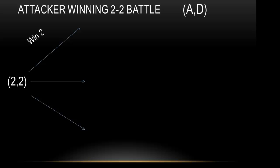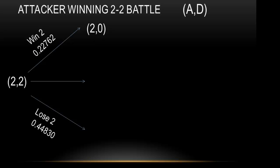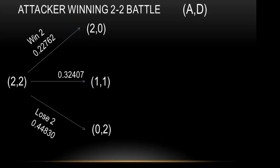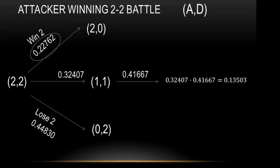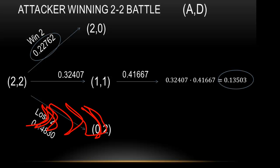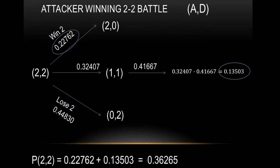A two-on-two battle actually has three branches because both sides are rolling two dice. You can win two, meaning the defender has no more armies and the battle is over. You can lose both, meaning you have no more attacker units and the round is over. Or you can both lose one — one person won one die, the other won the other die — leaving a one-on-one. We already know the probability of winning a one-on-one battle, so we multiply through and get 0.13503. Adding the probability of winning two outright plus the probability from the one-on-one branch gives us the probability of a two-on-two.